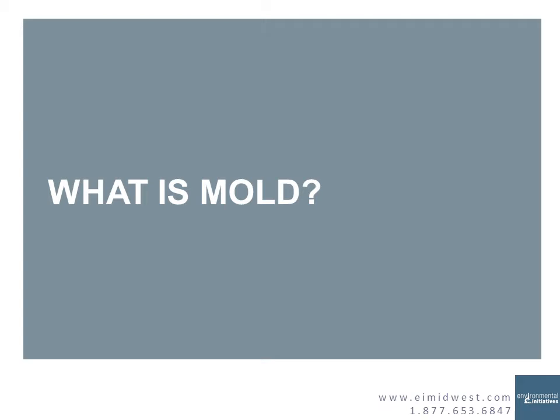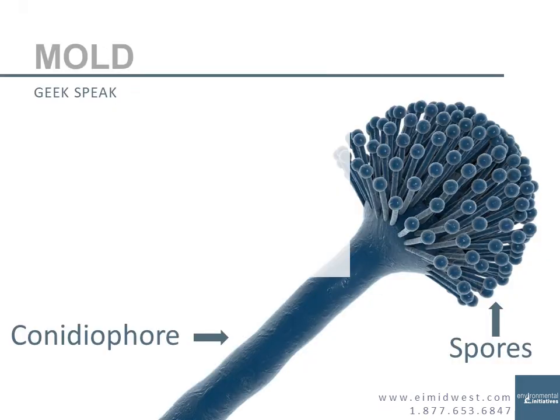First off, what is mold and how do you explain it to people? Mold is what we call a filamentous fungus. Fungi is a kingdom of organisms that includes molds, yeasts, mildews, rot organisms, and several other types of organisms. Mold, if you think of it, is similar to a dandelion — it grows on the surface of the material. It has roots, stems, and seeds, basically. Most of the stems are called conidiophores, and for most molds, the seeds are called spores.